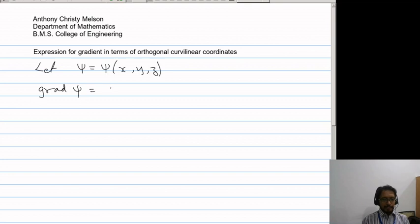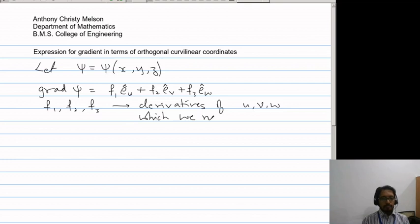Let psi be a function of x, y and z and we need an expression for grad psi. Since grad psi is a vector in the orthogonal curvilinear coordinates, it would take the form f1 e_u plus f2 e_v plus f3 e_w where f1, f2, f3 are functions of or derivatives in terms of u, v and w which we need to find.